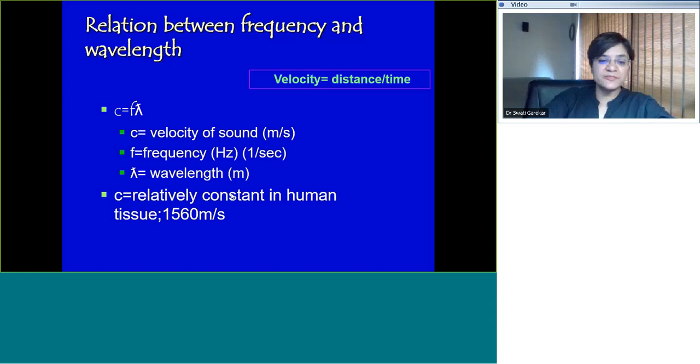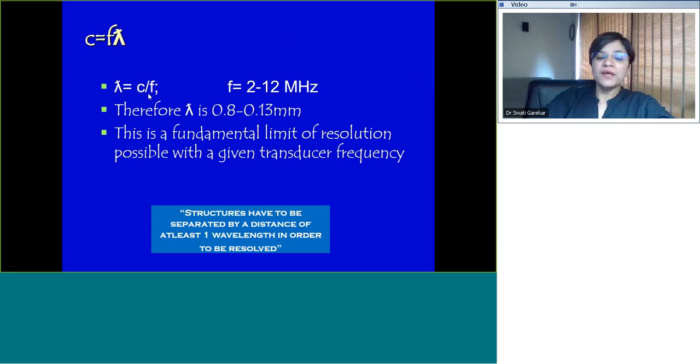C is constant in human tissue. The velocity of sound waves in soft tissue is around 1540 meters per second. The frequency that we use in medical applications is 2 to 12 megahertz. If you rearrange the equation, lambda equals c by f. C is fixed while f varies from 2 to 12 megahertz. Your lambda will vary from 0.8 to 0.13 millimeters. That's your wavelength. Structures have to be separated by at least 0.1 mm to be seen as two structures. This is the fundamental limit of resolution possible with a given transducer frequency.